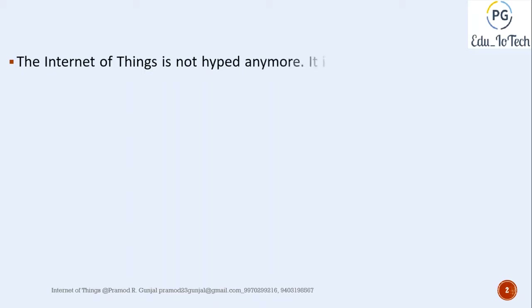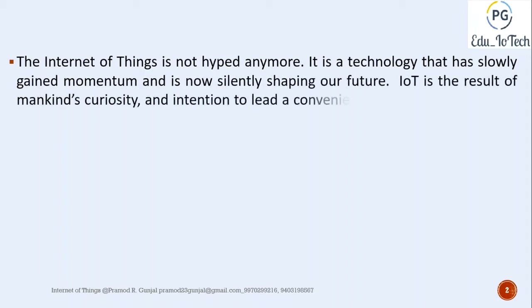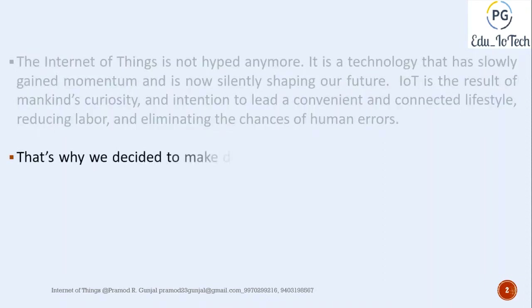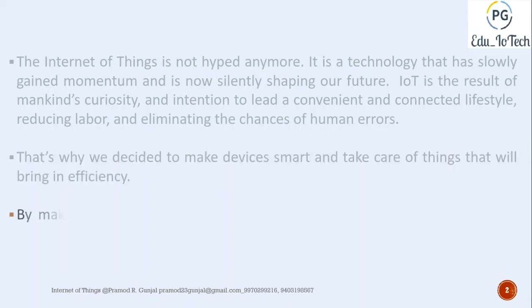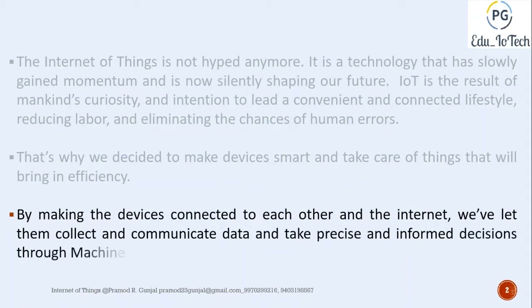The Internet of Things is not hyped anymore. It is a technology that has slowly gained momentum and is now silently shaping our future. IoT is the result of mankind's curiosity and intention to lead a convenient and connected lifestyle, reducing labor and eliminating the chances of human errors. That's why we decided to make devices smart, connecting them to each other via the internet, letting them collect and communicate data and take precise, informed decisions through machine learning, neural networks, and complex mechanisms.